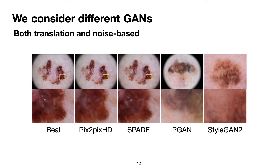We investigate the use of different GANs, both translation and noise-based. For translation, we have Pix2PixHD and SPADE. In those methods, images are created based on semantic maps that carry information from the real images. Despite being able to generate very realistic samples, these methods are limited by the amount of images they can generate because they depend on real images to provide the input maps. For noise-based, we have Progressive GAN and StyleGAN, and these can generate an unlimited amount of samples, since they only receive noise sampled from some noise distribution as input.